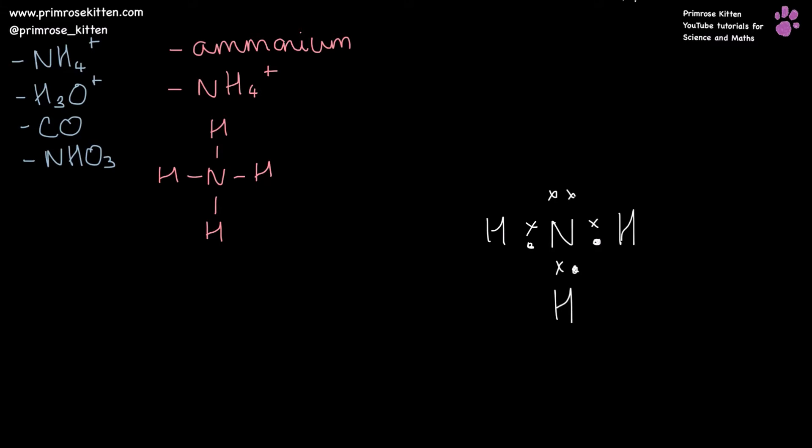And occasionally, what will happen is that a hydrogen ion will come along. Now, if we just pause for a second and think about what a hydrogen ion is. It is that hydrogen has one proton and one electron. If it loses that electron, it's just a proton. And it has two spaces in its outer shell.